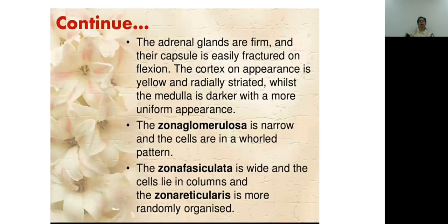The adrenal glands are firm and the capsule is easily identified. The cortex is yellow and radially striated. Zona glomerulosa is narrow with cells in a whorl pattern. Zona fasciculata is wide with cells in columns. Zona reticularis is more randomly organized.